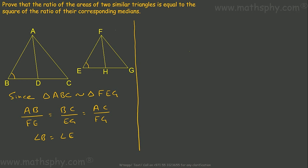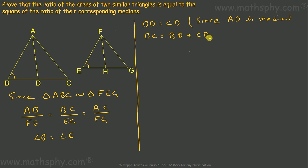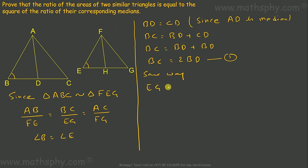It says AD and FH are the medians, which means BD will be equal to CD, since BC equals BD plus CD. So BC can be written as BD plus CD, and since BD equals CD, BC equals 2BD. Similarly, EG will be equal to 2EH.